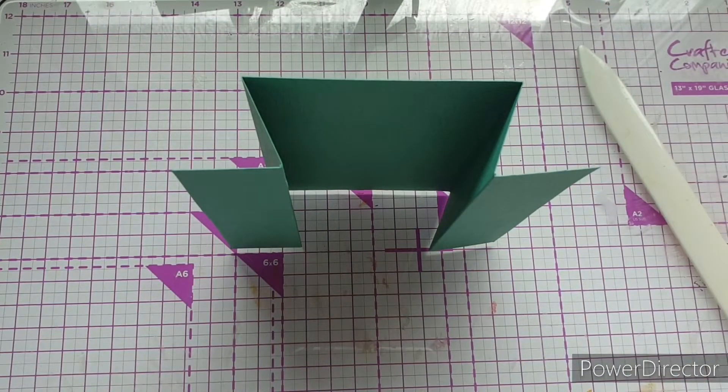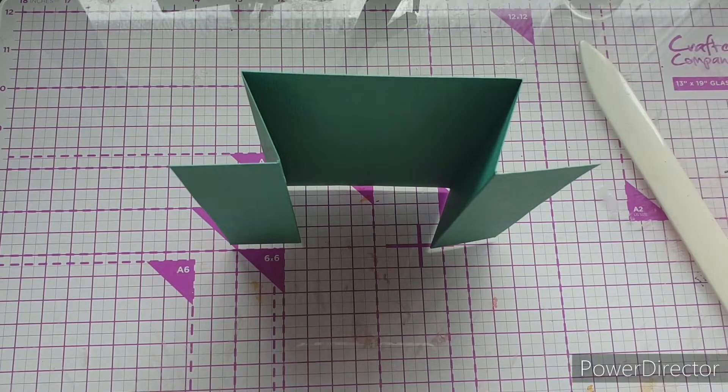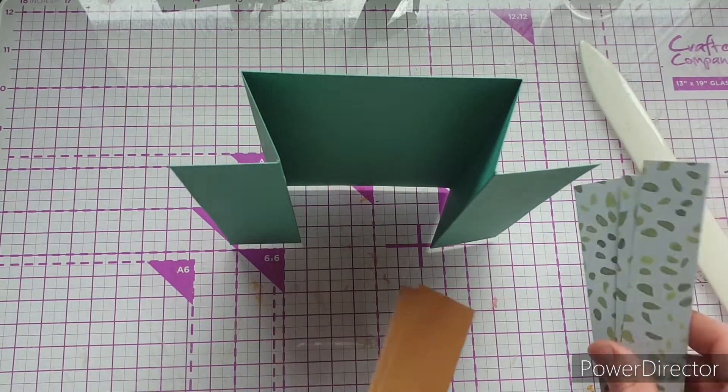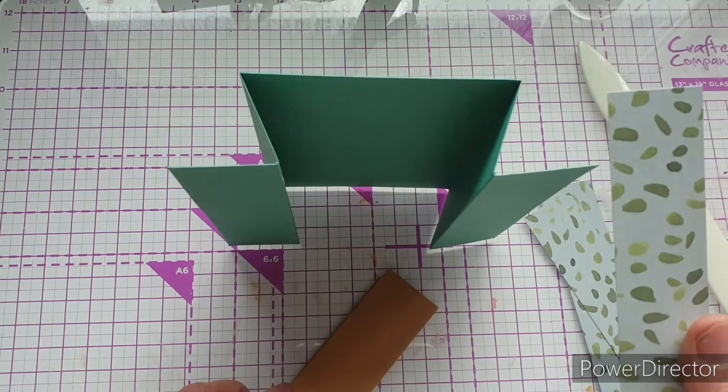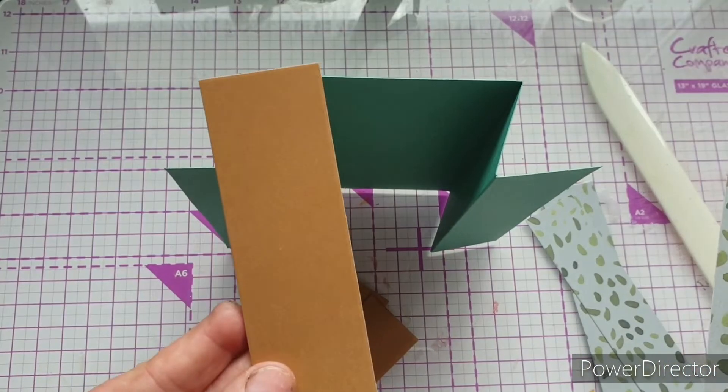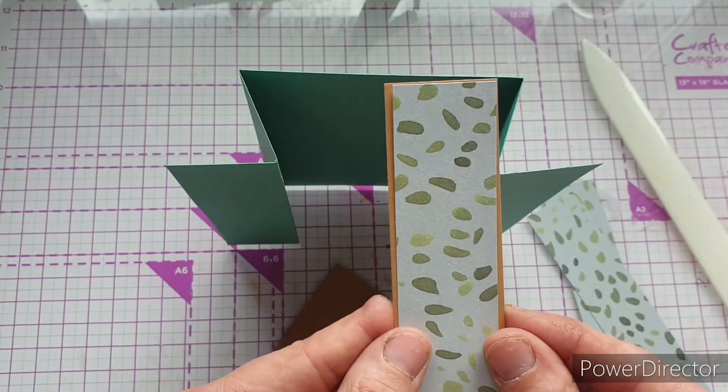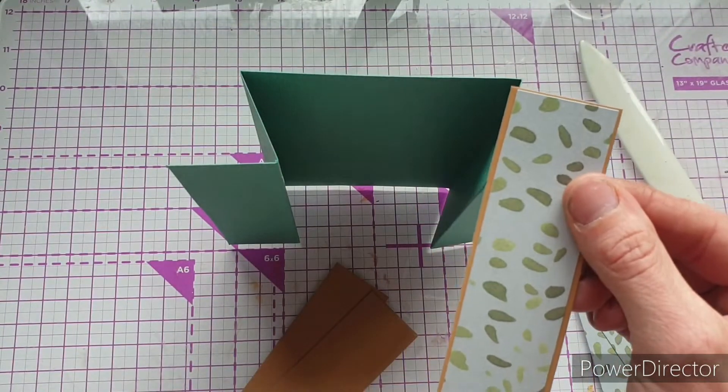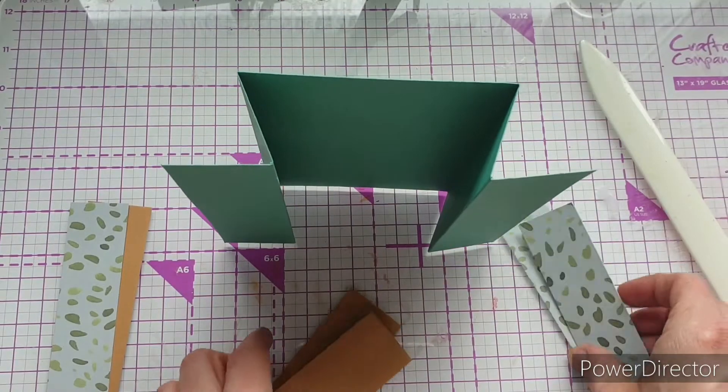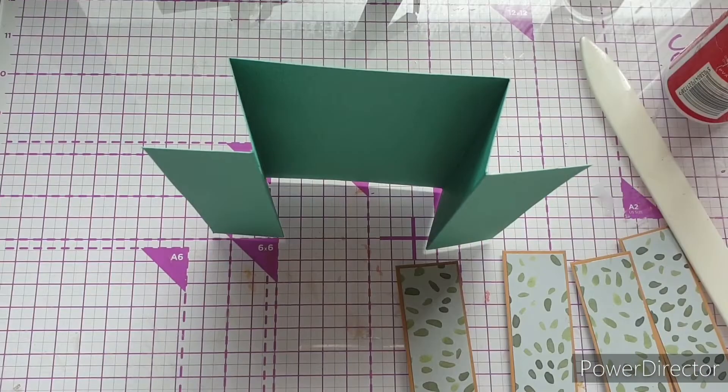And that is your card base. So really quickly off camera, what I'm going to do now is take one piece of the patterned paper and one piece of the coordinated cardstock, attach them together, and do that for all the pieces. Then I'll come back.